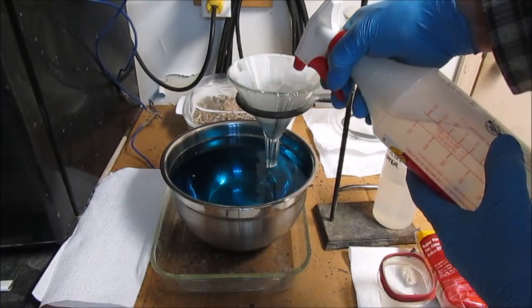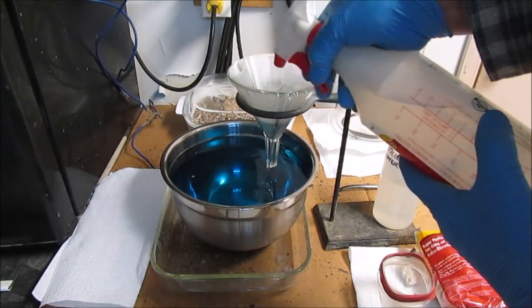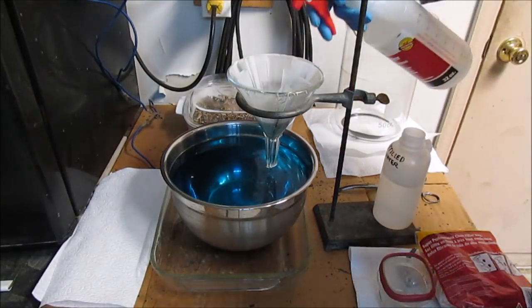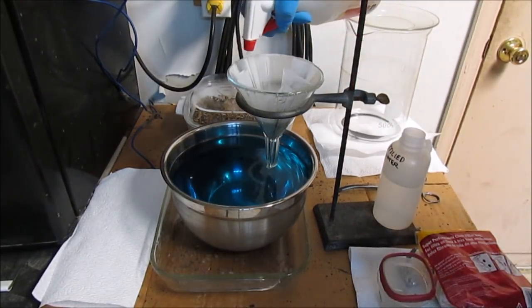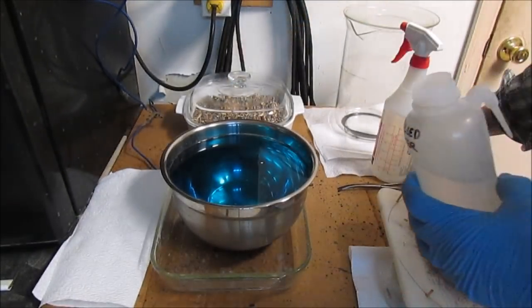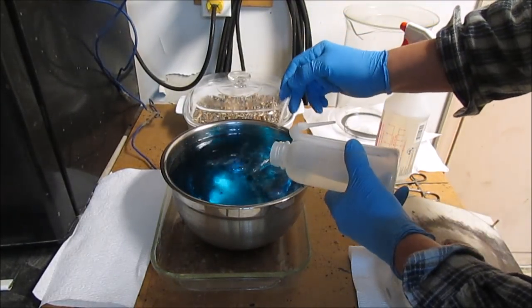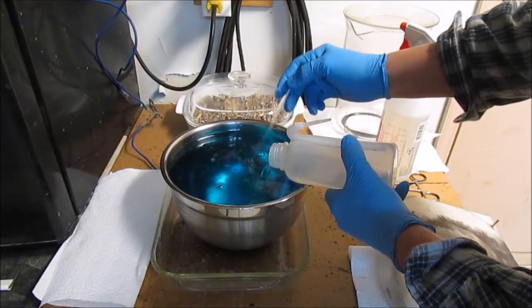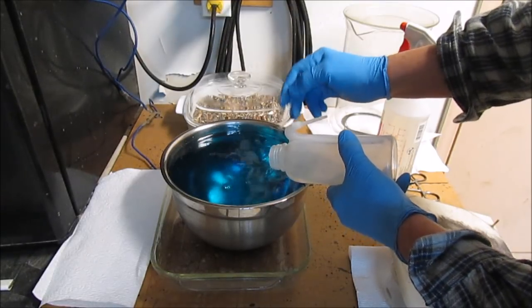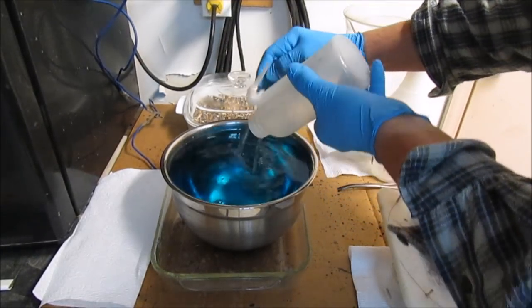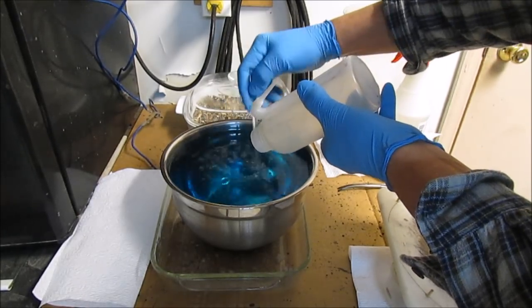I'm going to rinse the filter down real good with some distilled water here, trying to get all the silver nitrate rinsed out of it. And I'm going to add some distilled water to within a half an inch of the top of the container here. Stir it up real good so that we've got a homogenized mixture here.